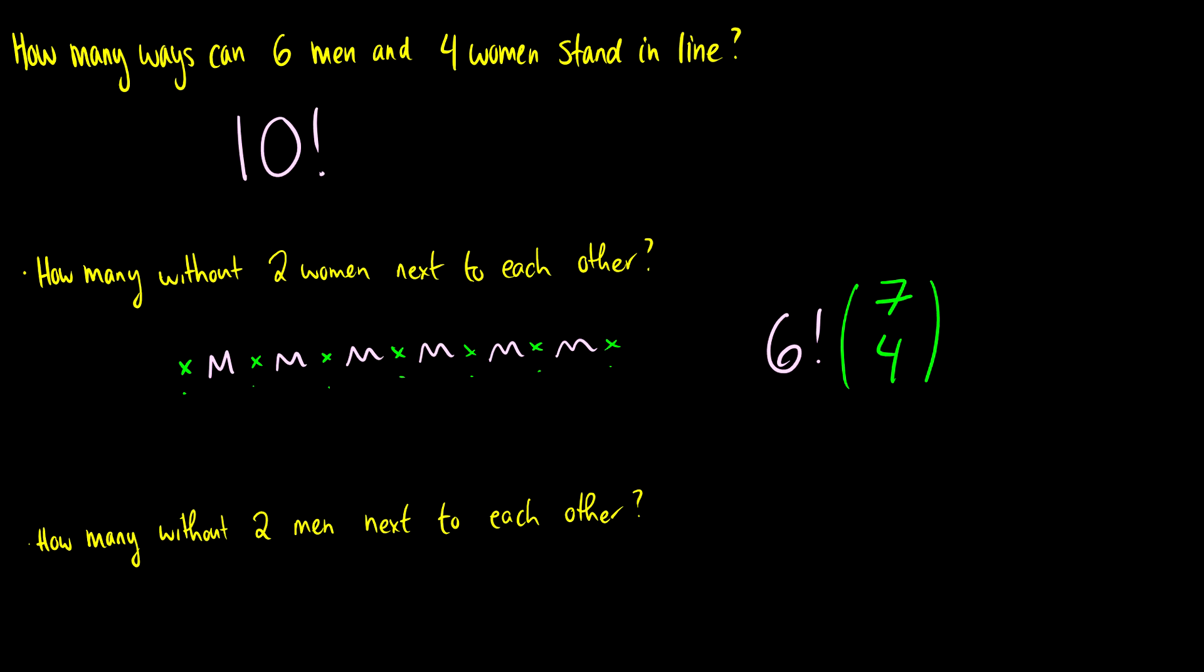And then our last step is we have to order the women. So there's four women. Let's say we place them there. Well, they're distinct women.